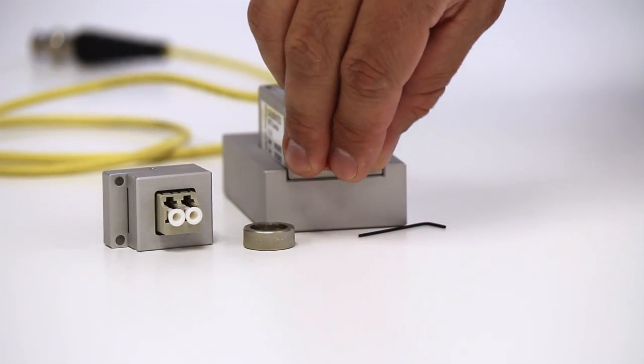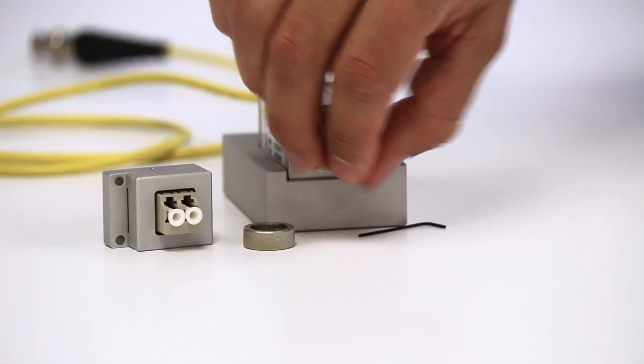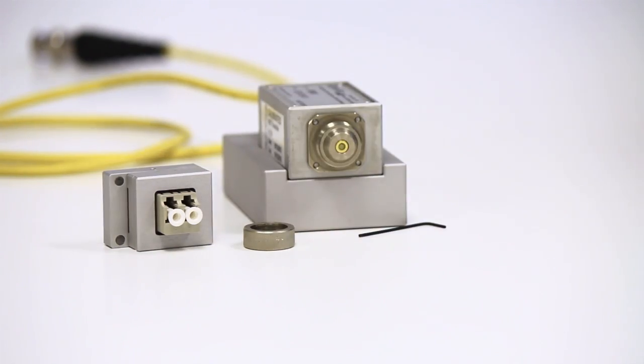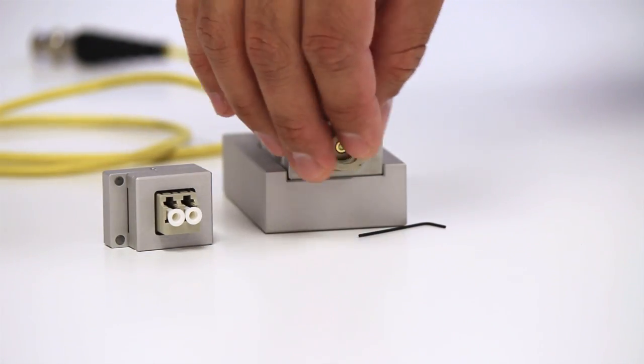Screw the threaded ring onto the detector. Take extra precautions as the detector is extremely fragile and will be exposed during this step.